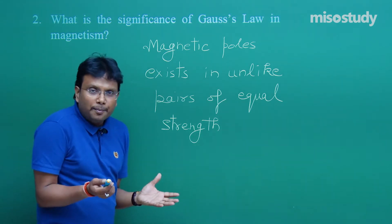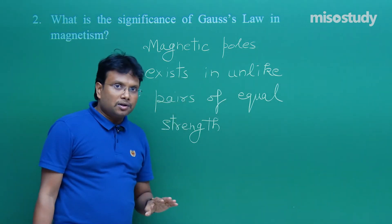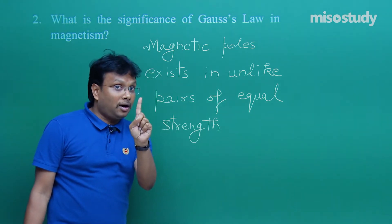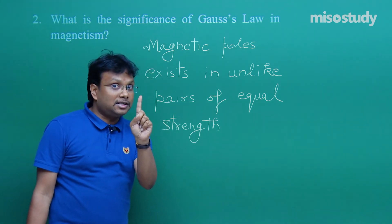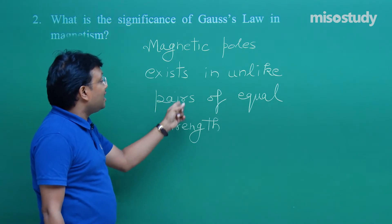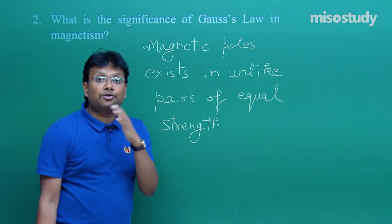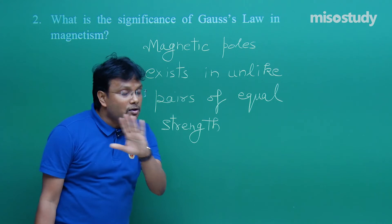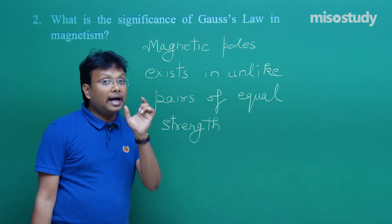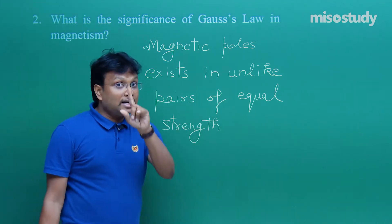The meaning is simple. Magnetic poles — in the previous question I mentioned a single pole cannot exist. So poles exist in unlike pairs. Unlike pairs means north-north or south-south cannot exist; it is always north-south, north-south. So unlike pairs of equal strength.